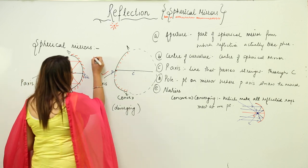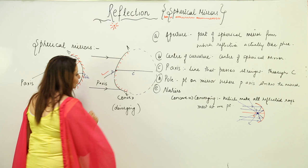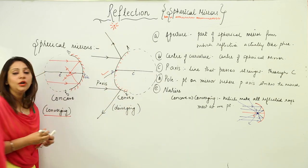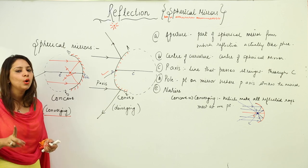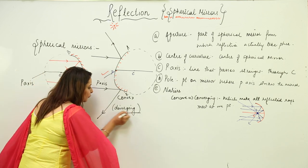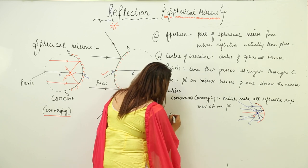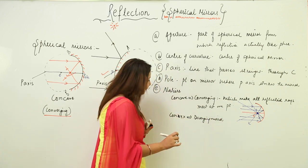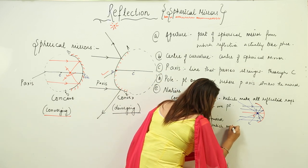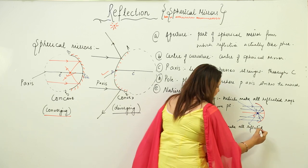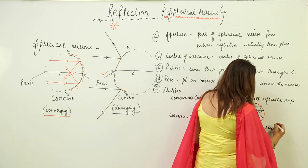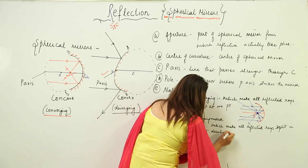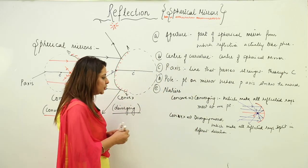For the convex mirror, suppose rays are striking it — they will also reflect, but they split in different directions. The convex mirror does not make all reflected rays meet at one point; instead it splits the rays. This kind of mirror is called a diverging mirror. The convex mirror is always a diverging mirror and its nature never changes. A diverging mirror makes all reflected rays split in different directions.